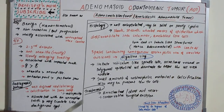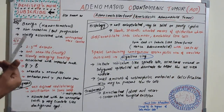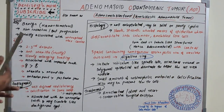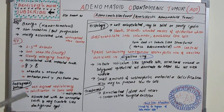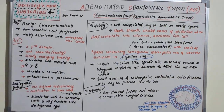The treatment of AOT is most commonly enucleation — a conservative surgical excision rather than a radical approach. AOT most commonly does not recur after removal.